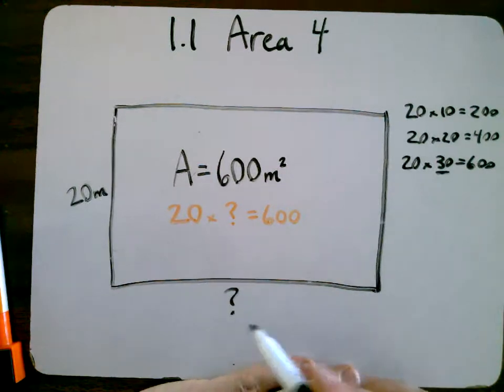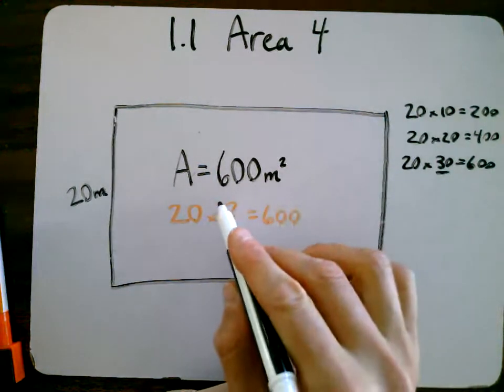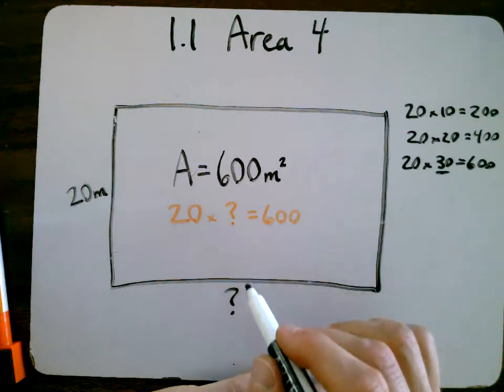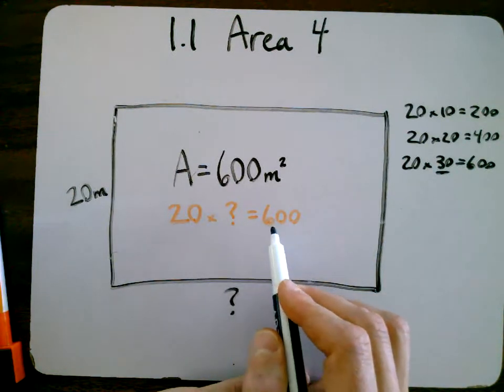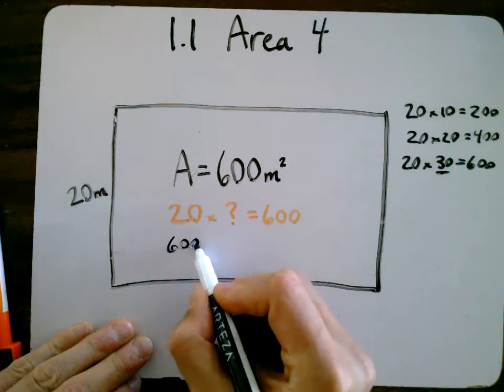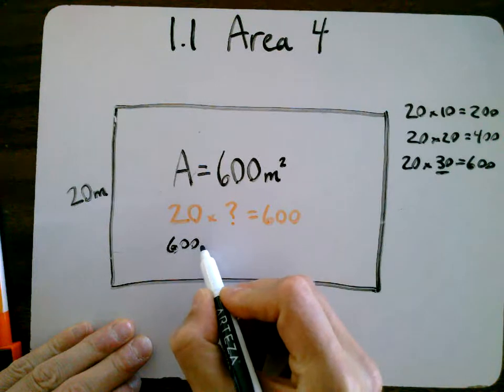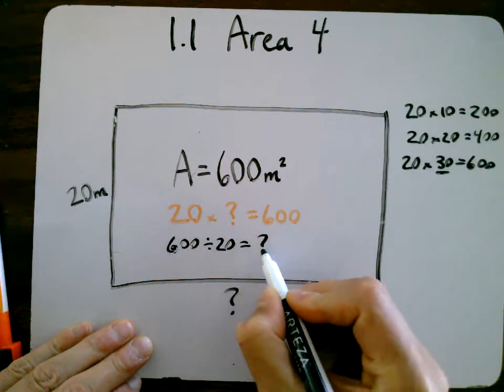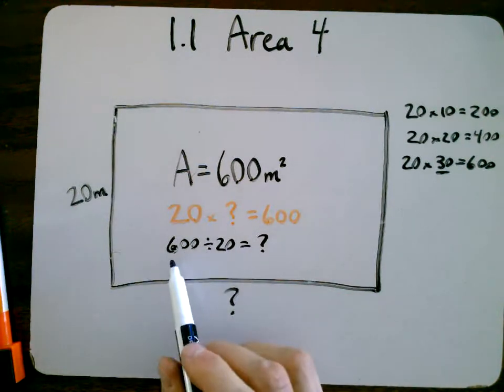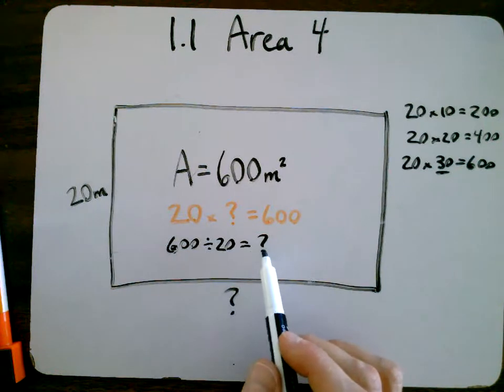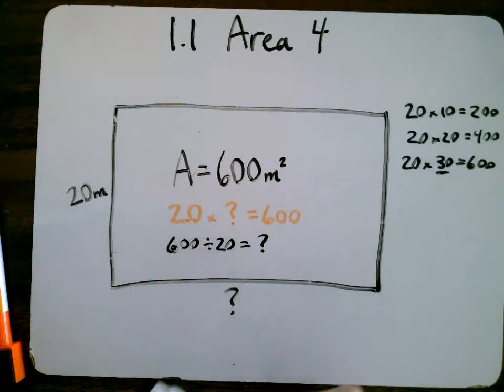But another way to reverse this and actually calculate this is we can divide. So if 20 times something is 600, that means that 600 divided by 20 equals that something, whatever that is. So if you were to get out your calculator and do 600 divided by 20, you're going to find that it equals 30. So that is another way of solving this problem in reverse.